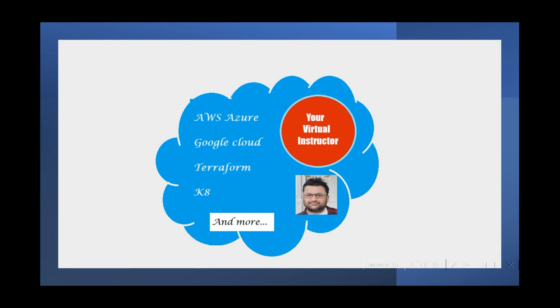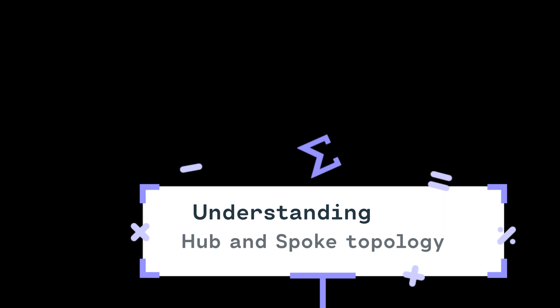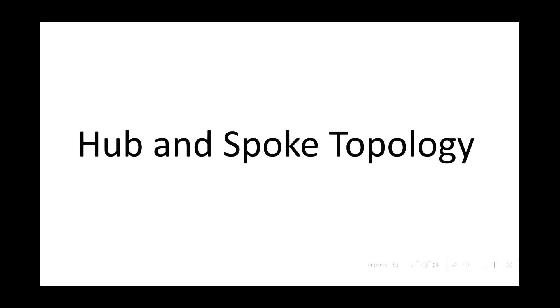Hello everyone, welcome to Your Virtual Instructor. Today we are going to talk about Hub and Spoke Topology. Hub and Spoke Topology is mainly used where you have multiple virtual networks and you want to control them from a centralized network, or you want to use any shared services which you can deploy in a centralized network and all the other connected networks can use those services.